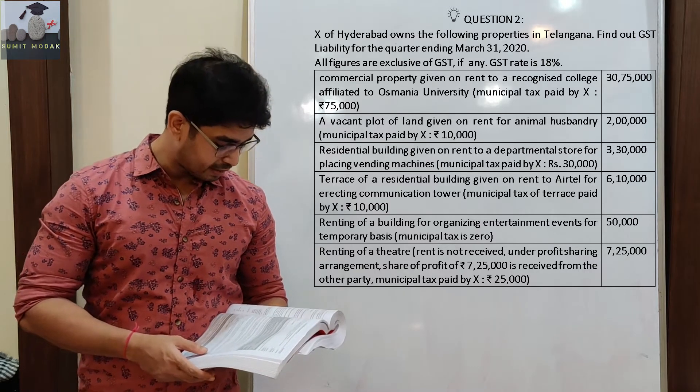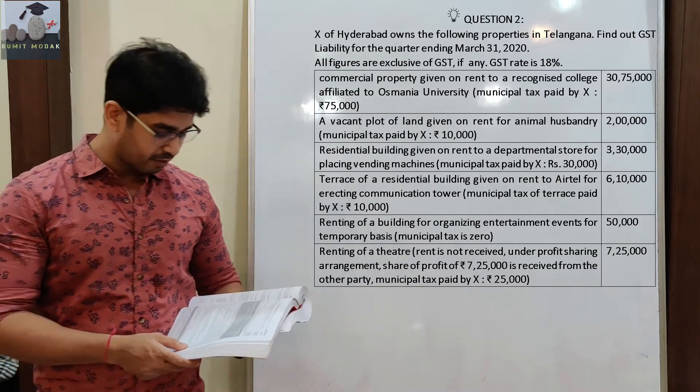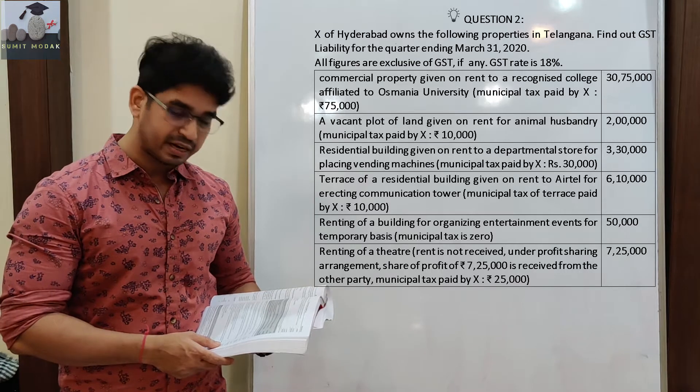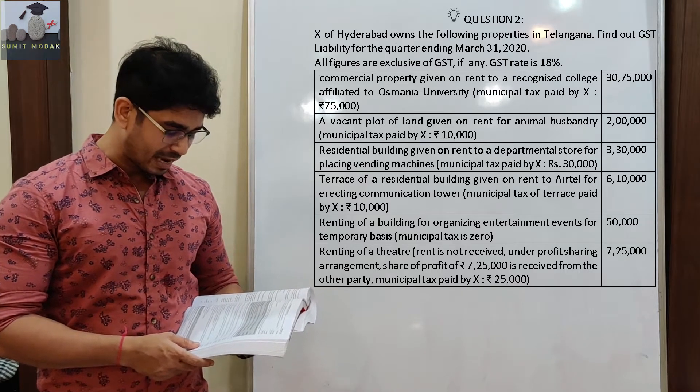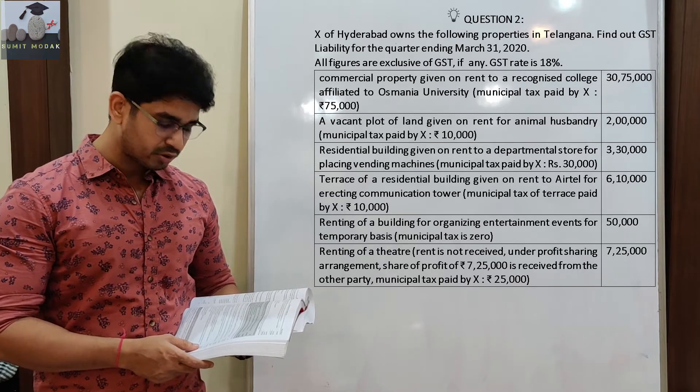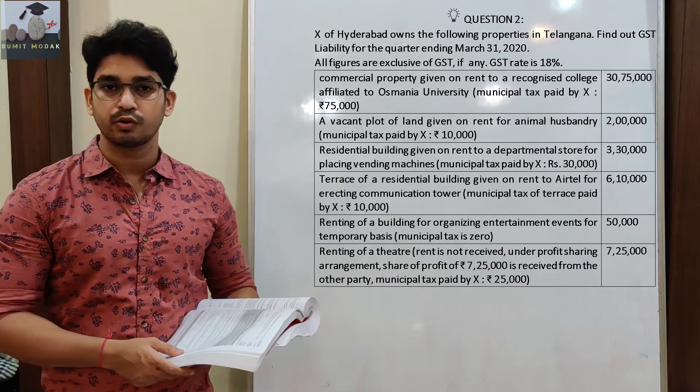Vacant plot of land given on rent for animal husbandry. Municipal tax paid by X: Rs. 10,000. Total amount: Rs. 2,00,000.